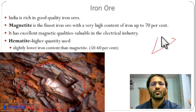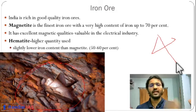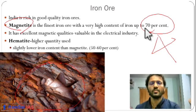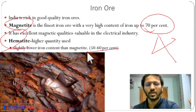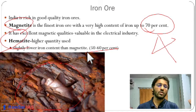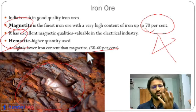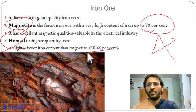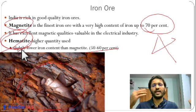There are four types of iron ore: magnetite, hematite, siderite, and limonite. Magnetite is a very high-grade iron ore containing almost 70% iron, and its magnetic properties make it valuable for the metallurgical industry as well as for magnet production. Hematite contains 50-60% iron. India has greater availability of hematite than magnetite, though hematite has slightly lower iron content. Iron is used in making steel and is a fundamental part of almost every aspect of our lives.